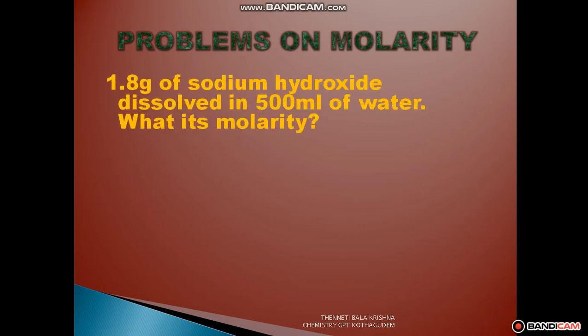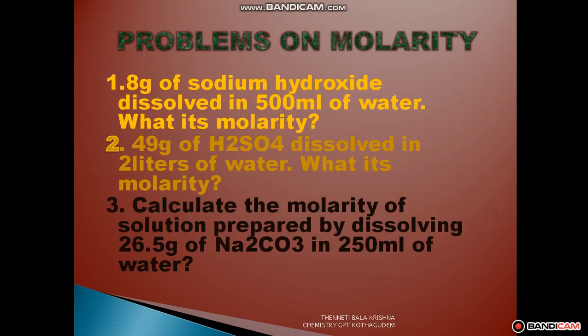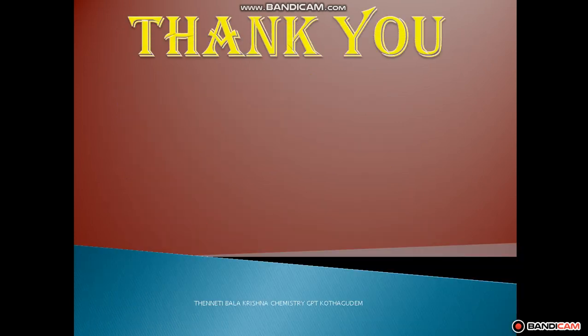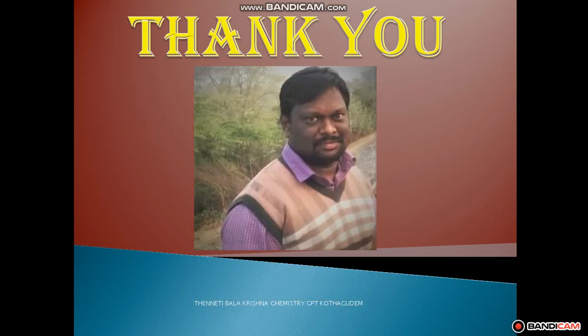Students, you solve these problems. First, observe whether the volume is present in litres or millilitres. If the volume is in litres, use W by gmw into V. If it is in millilitres, use W into 1000 by gmw into V. By using these simple techniques, you can solve the problems. If you have any doubts, repeat the video again. Thank you students, this is T. Balakrishna.